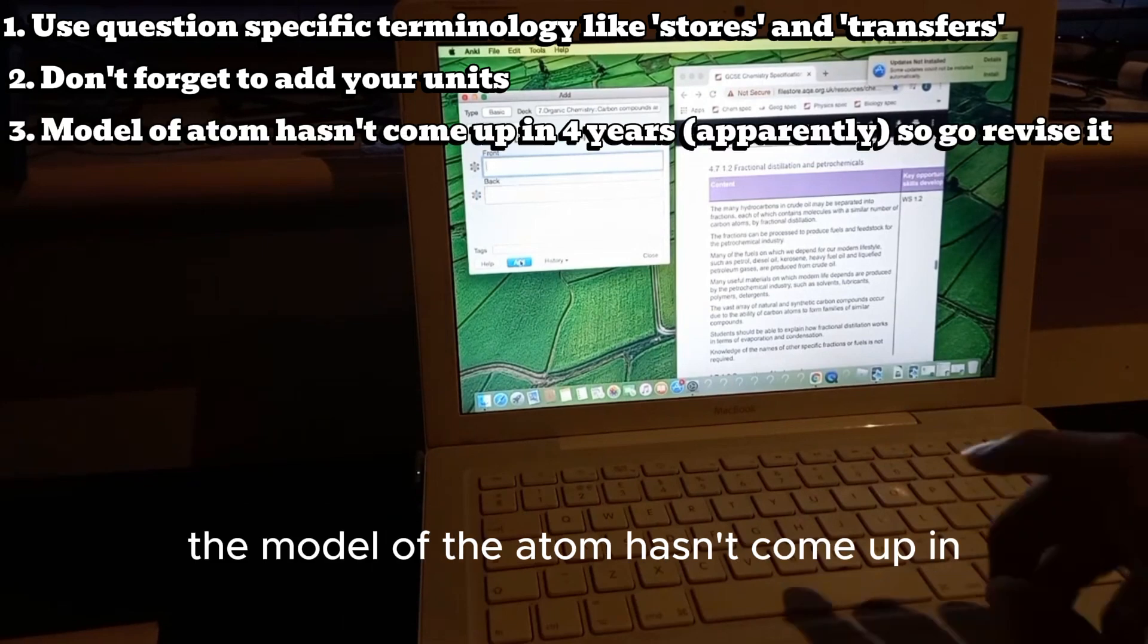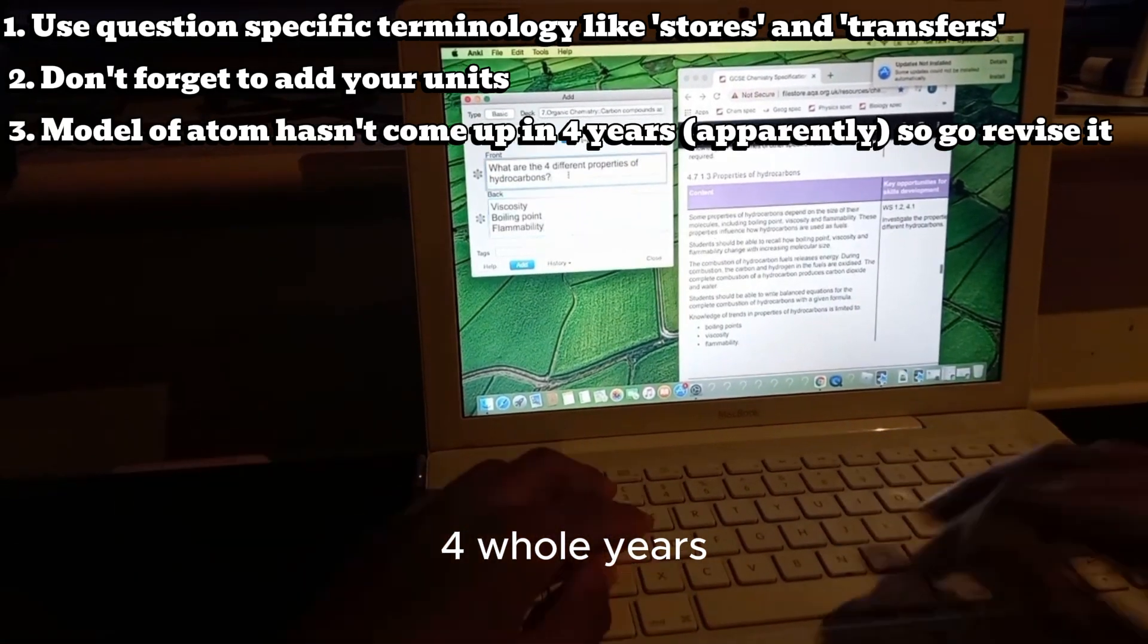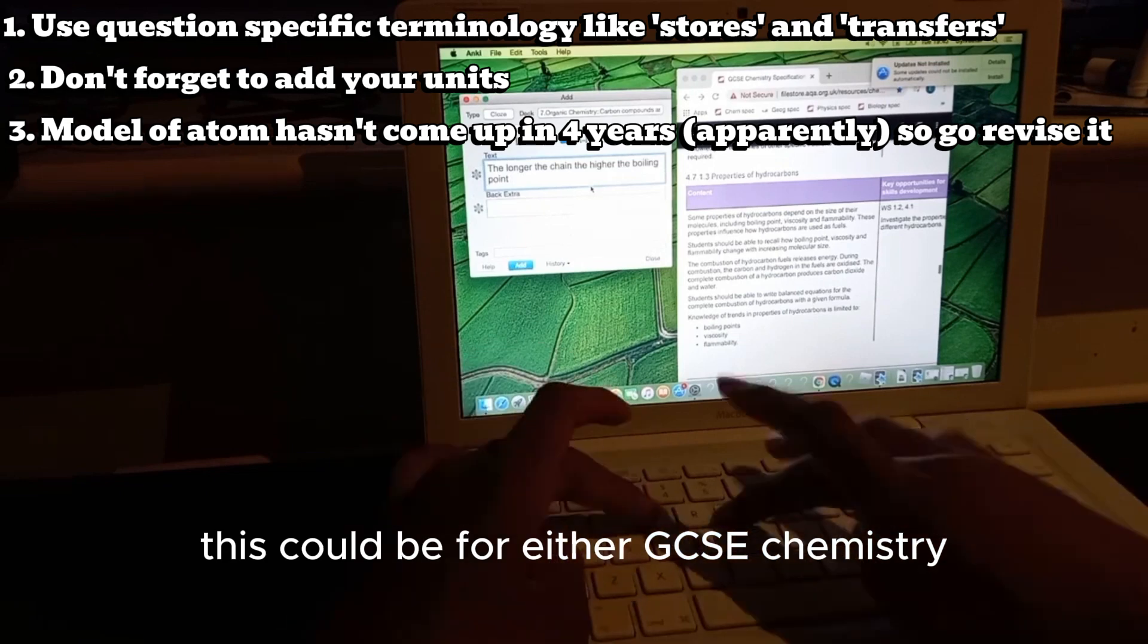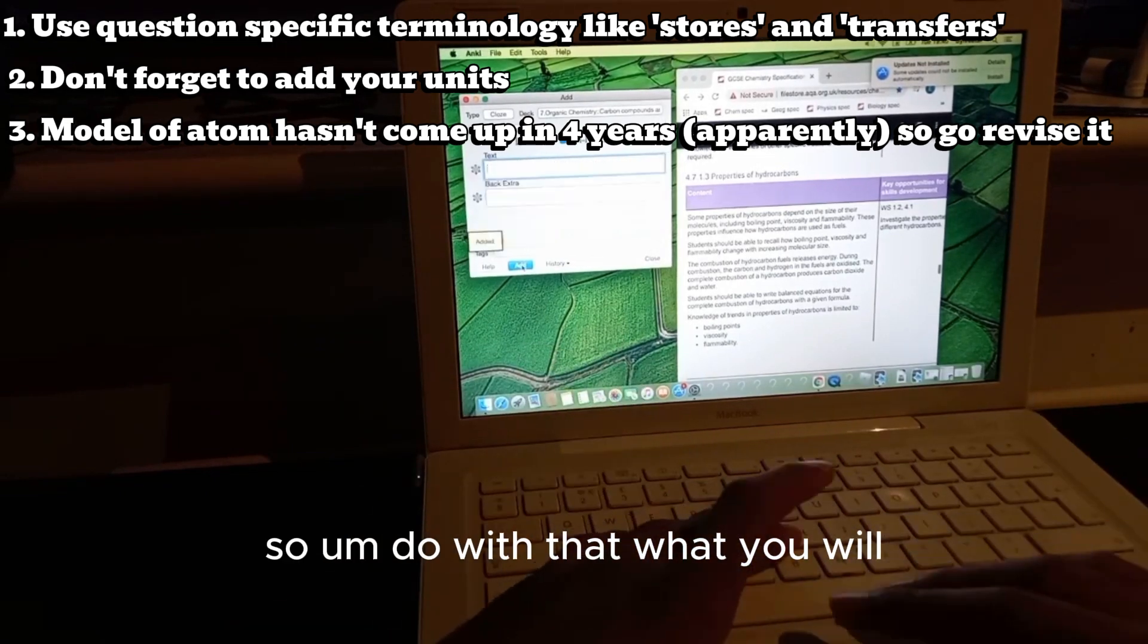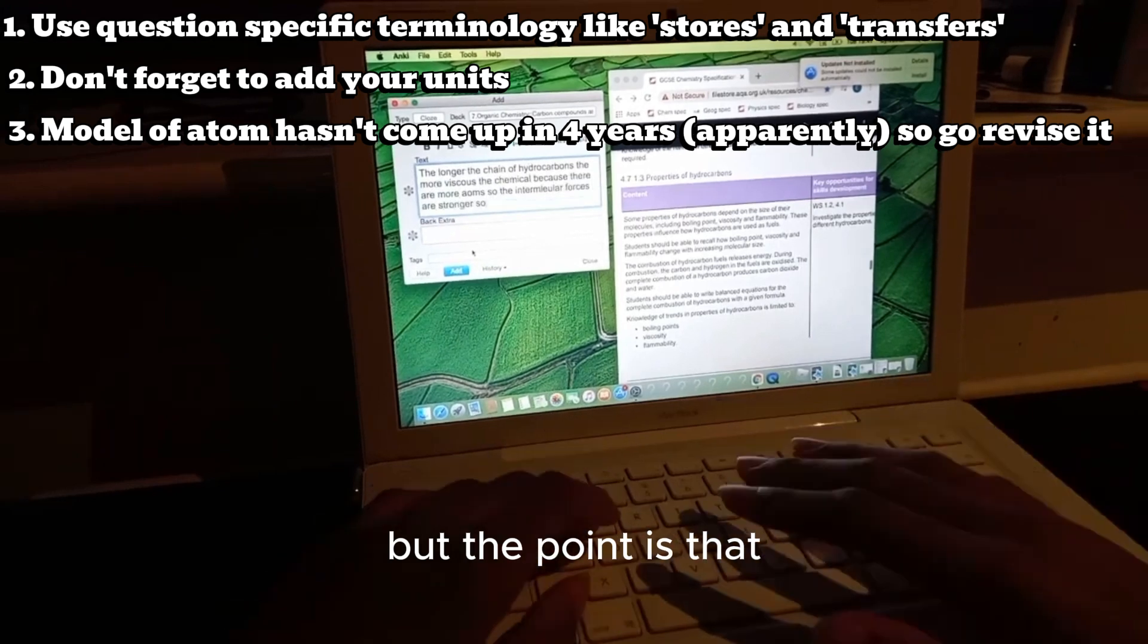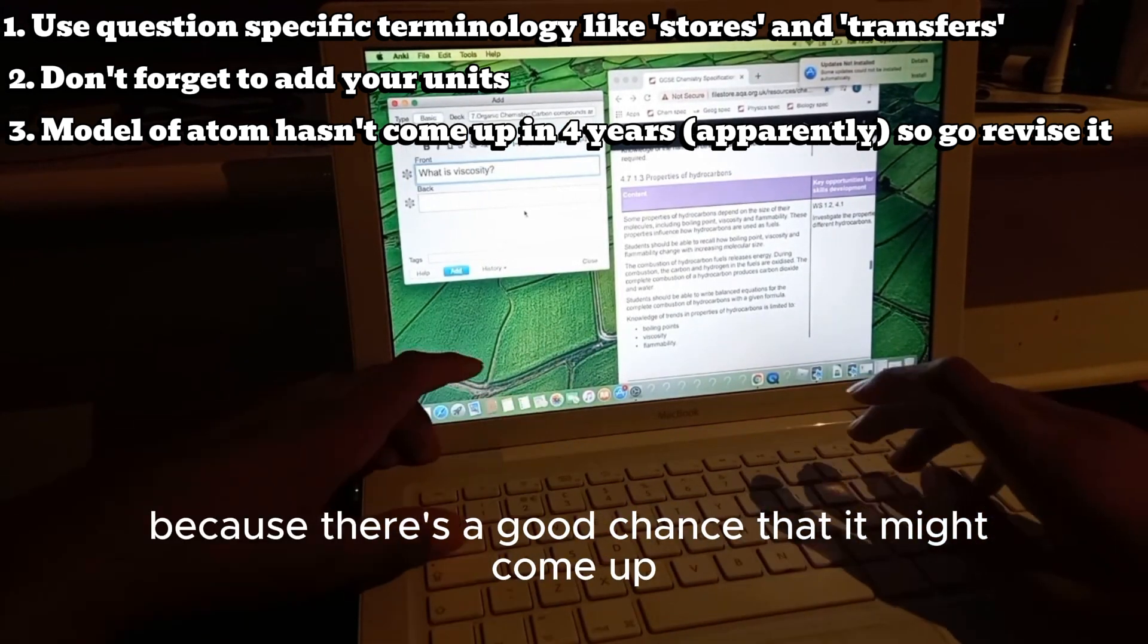My third tip is that the model of the atom hasn't come up in four whole years. This could be for either GCSE chemistry or GCSE physics though, so do with that what you will. But make sure you look over it before the exam because there's a good chance that it might come up.